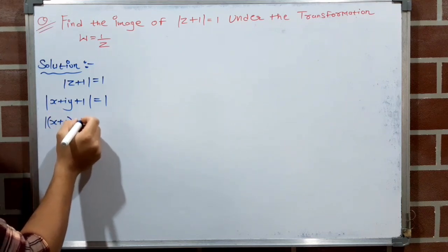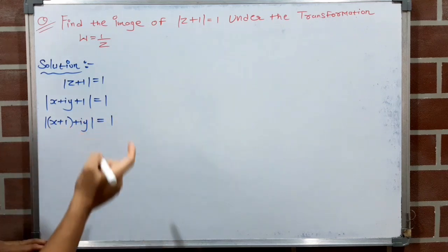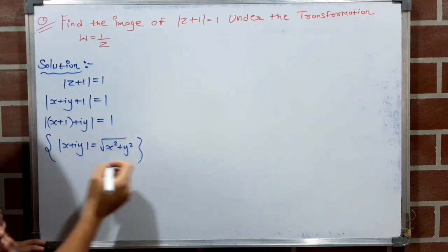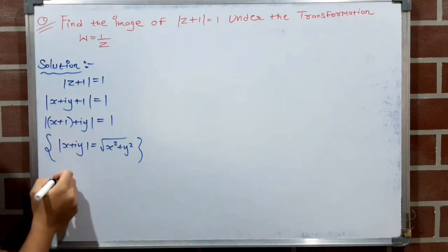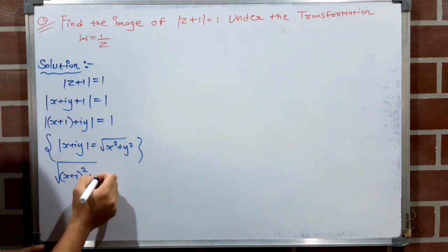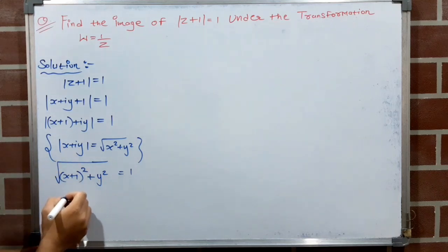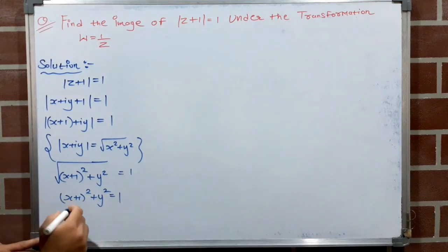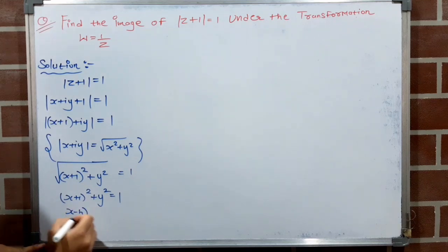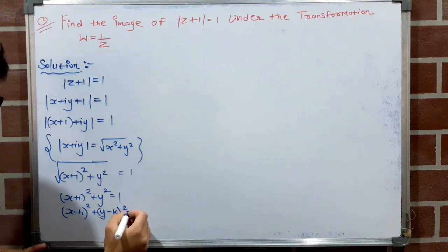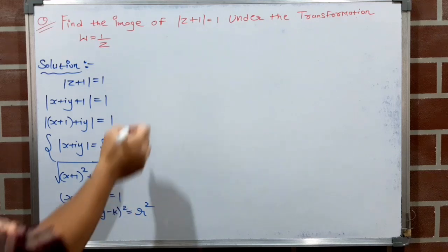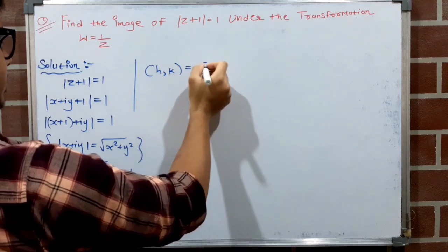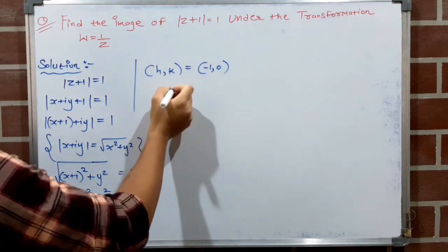As we know |x+iy| = √(x²+y²), applying this gives √((x+1)²+y²)=1. Squaring both sides: (x+1)²+y²=1. Comparing with (x−h)²+(y−k)²=r², where h,k is the center and r is the radius, we get center = (−1, 0) and radius = 1.